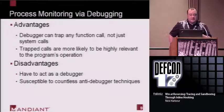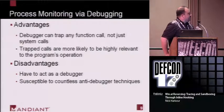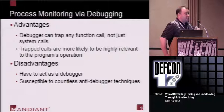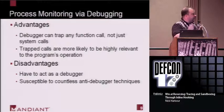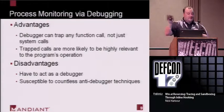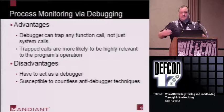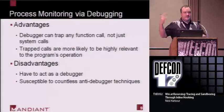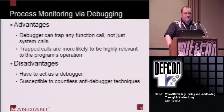Another technique for API call monitoring is using a debugger, which is pretty good — you can trap function calls all day long, not just system calls. A scriptable debugger is a very good solution, and the trapped calls can be highly relevant to the program's operation. The main disadvantage is you have to act as a debugger, and once you do, you're thrown into the cat-and-mouse game of debugging, anti-debugging, anti-anti-debugging. I was just looking for a cheap way to get that functionality without having a debugger involved whatsoever.